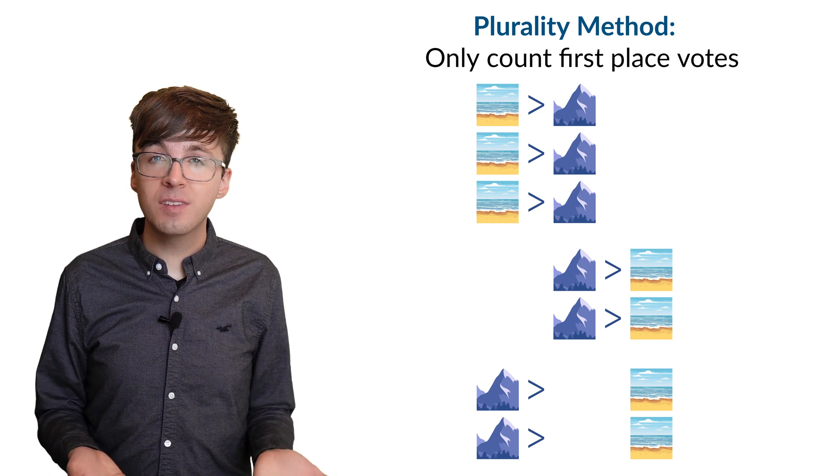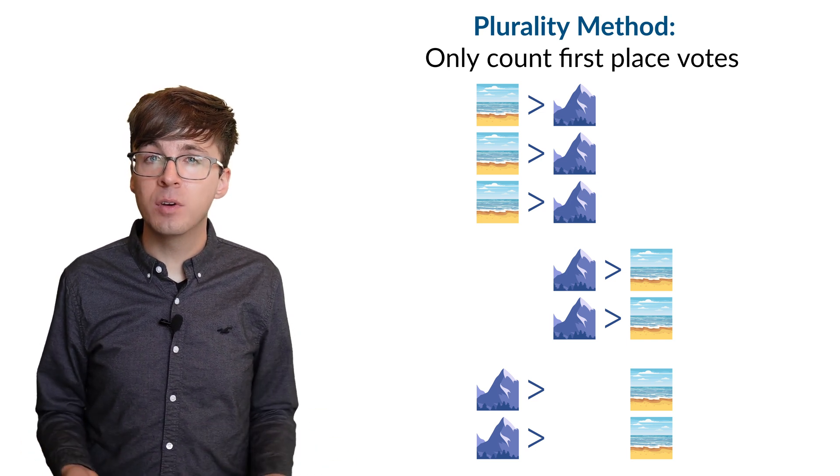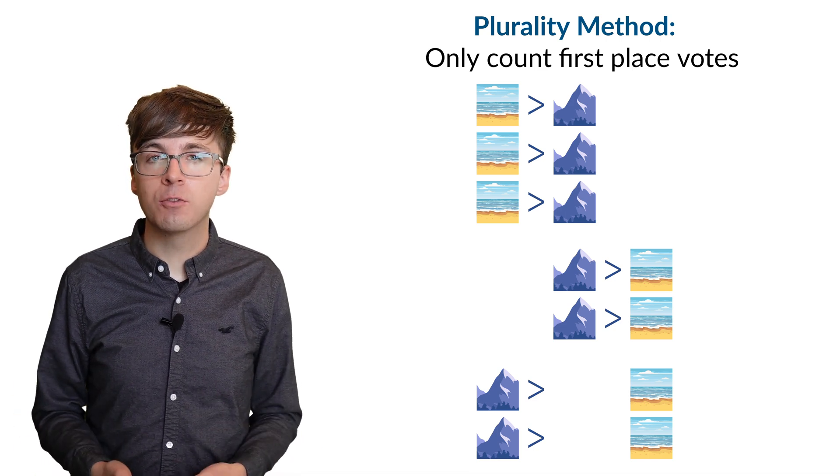And Arrow's theorem tells us this isn't just a problem with plurality voting. Any other voting system that we construct is going to have similar issues.